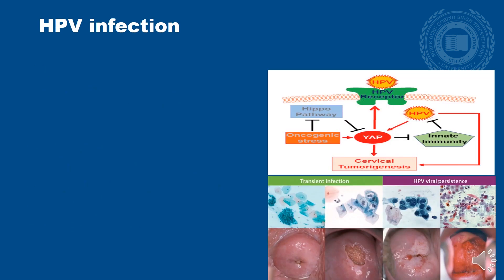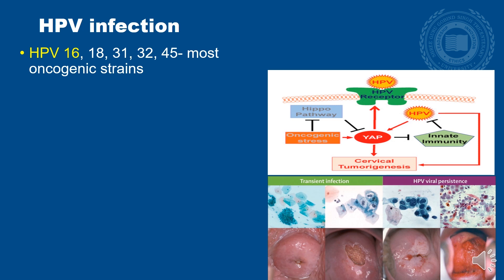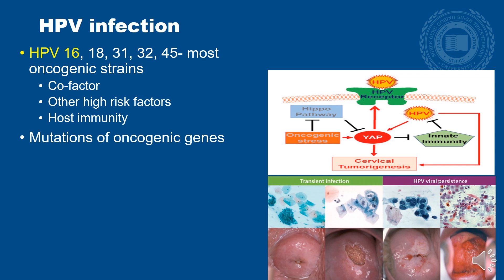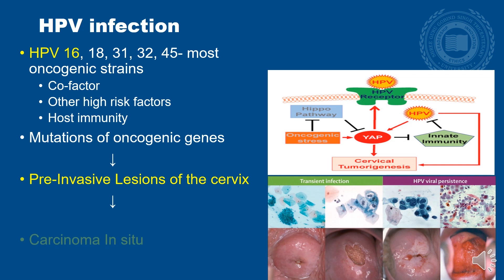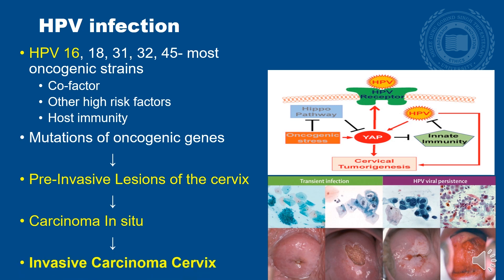Human papilloma virus causes anogenital warts in humans. Strains HPV 16, 18, 31, 32, and 45 are the most oncogenic varieties. These act as cofactors working with other high-risk factors, modulating host immunity and causing mutations in oncogenic genes. This leads to pre-invasive lesions — cervical intraepithelial neoplasia CIN 1, 2, and 3 — which proceed to carcinoma in situ and then to invasive carcinoma cervix.